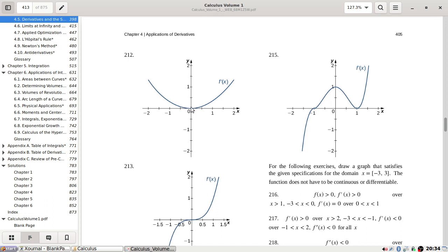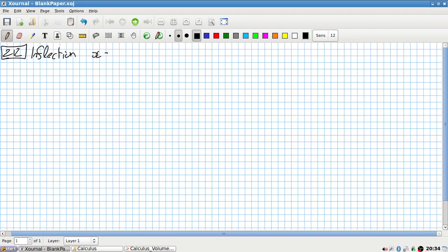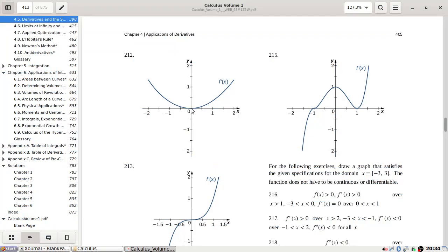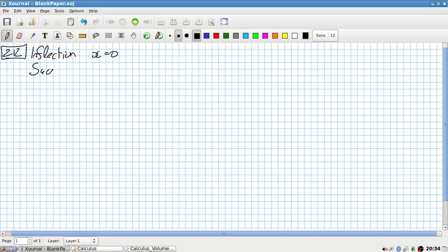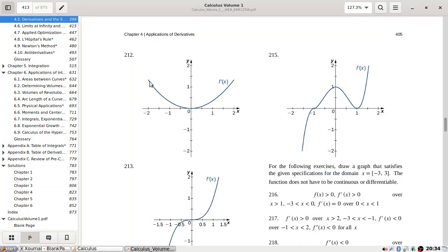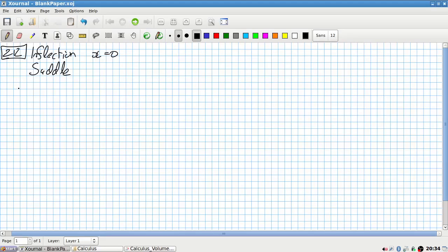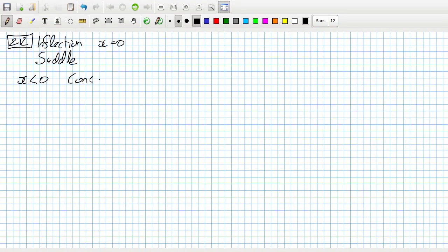Hmm, probably here. But it's actually a saddle point. And then the second derivative, it is negative, positive. Negative makes it a max, so when x is less than zero, that is concave down.